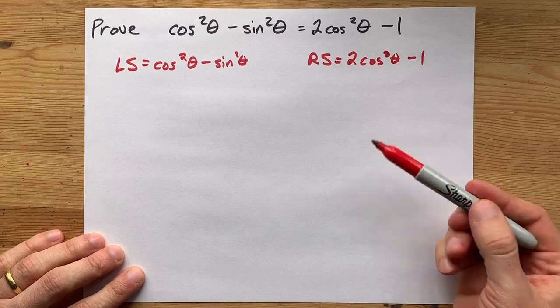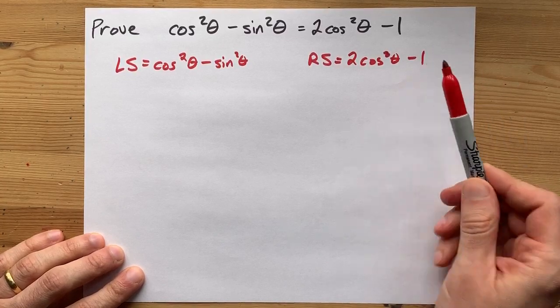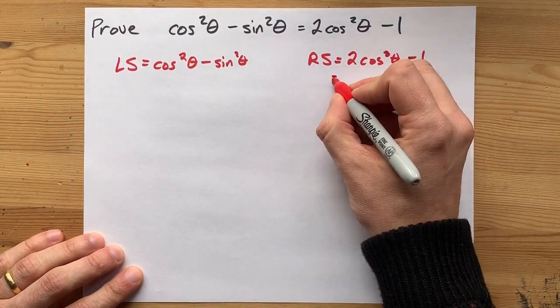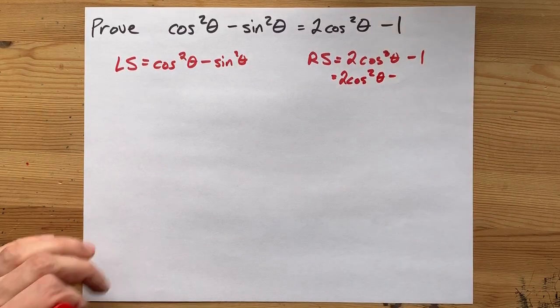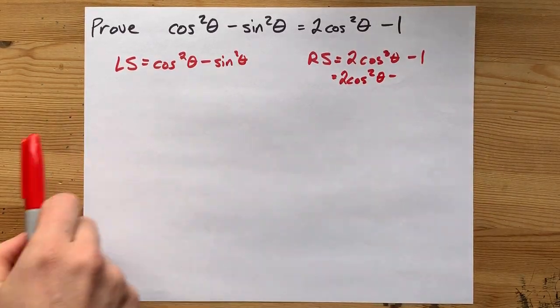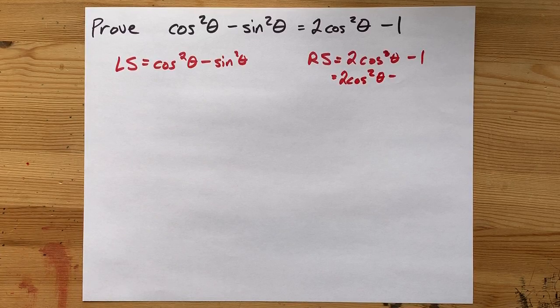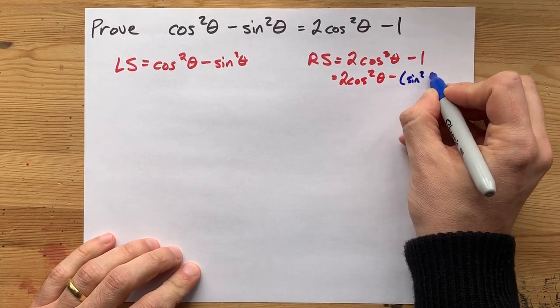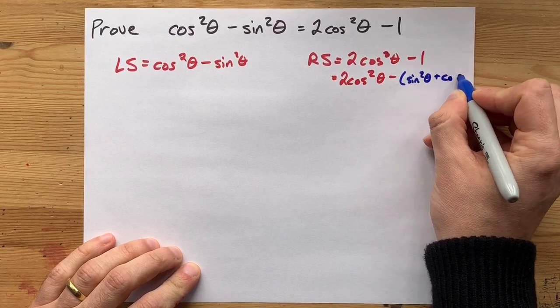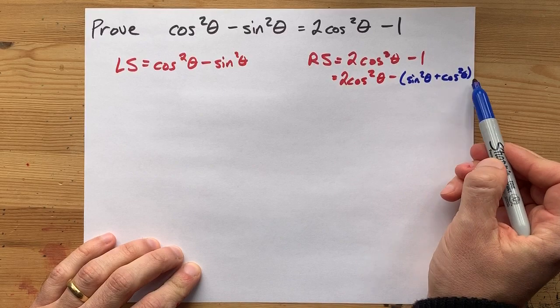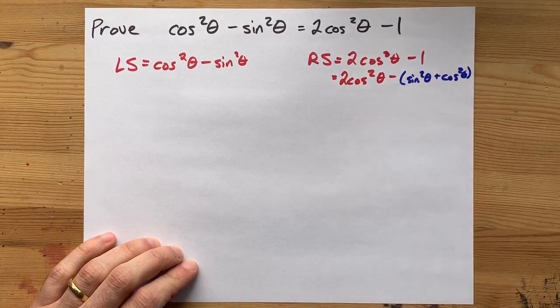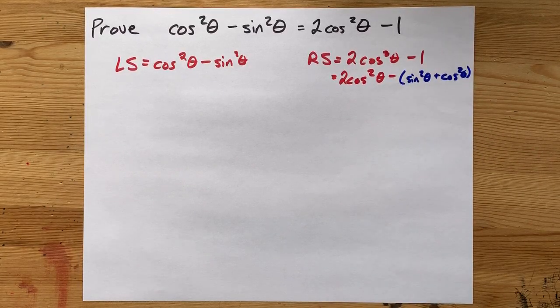Now, one option you have is to replace one with the Pythagorean identity. Do you know what that is? You should, if you're doing trig identities. Instead of the one, I'm going to replace that with sine squared of the angle plus cos squared of the angle. The fact that that always equals one for every angle is called the Pythagorean identity.